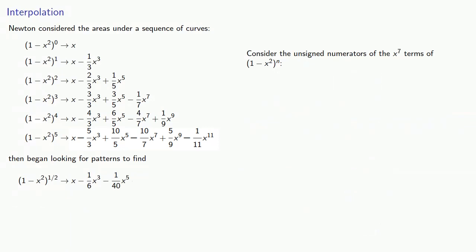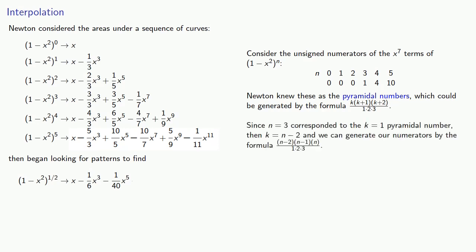Consider the unsigned numerators of the x^7 terms of (1 - x²)^n. These are... Now you might have recognized the previous sequence as the set of triangular numbers. This one's a little bit more obscure, and Newton actually knew these as what are known as the pyramidal numbers, which could be generated by the formula k(k+1)(k+2)/(1×2×3). And again, since n = 3 corresponds to the k = 1 pyramidal number, then k = n - 2, and we could generate our numerators by the formula (n-2)(n-1)n/(1×2×3).